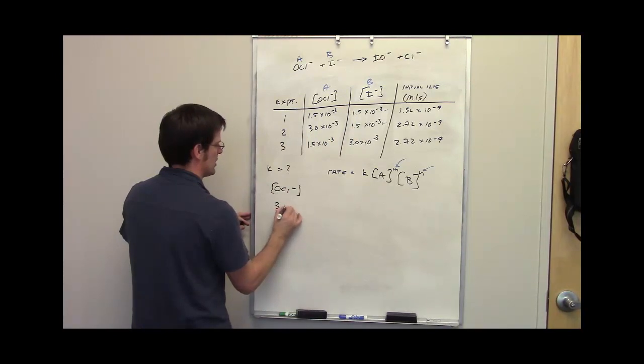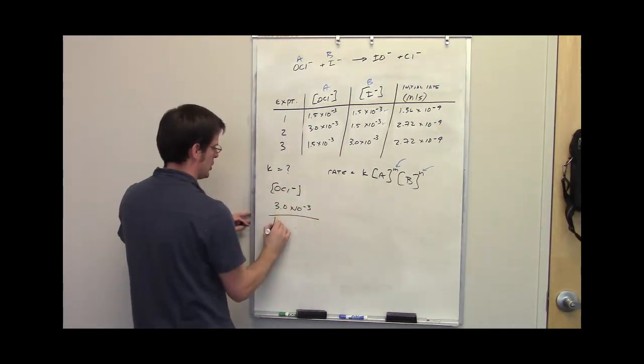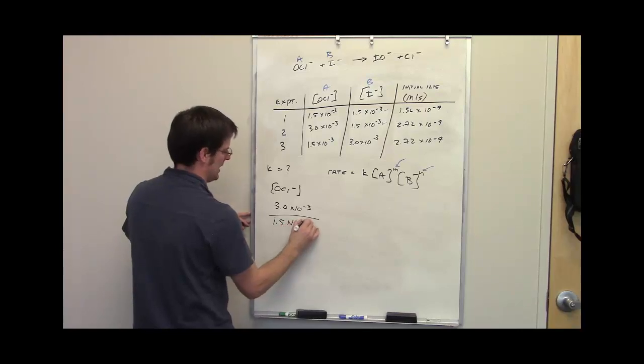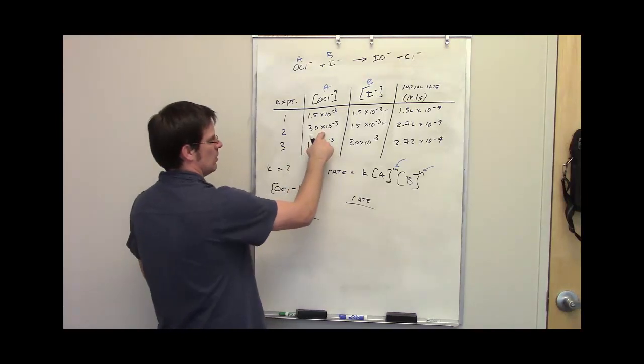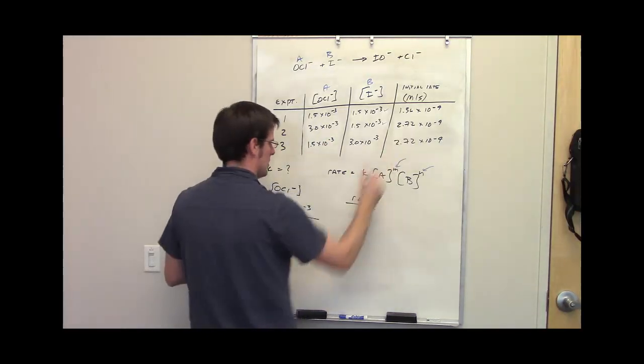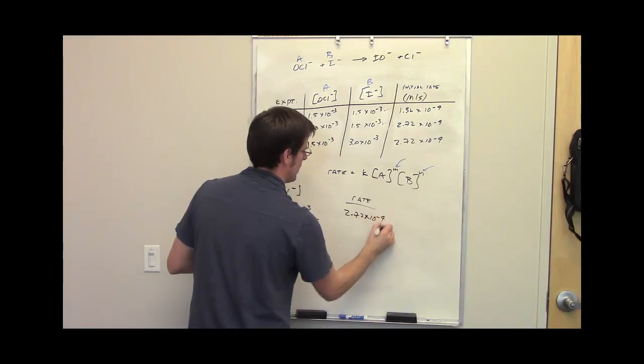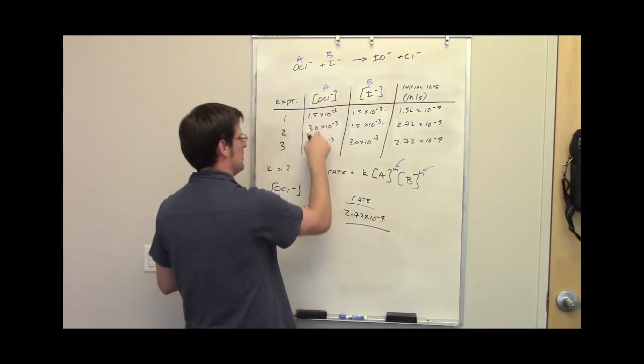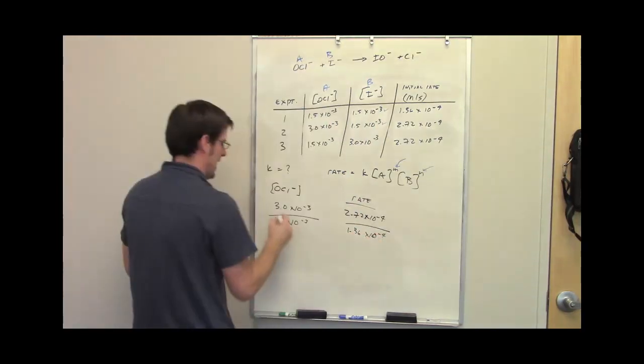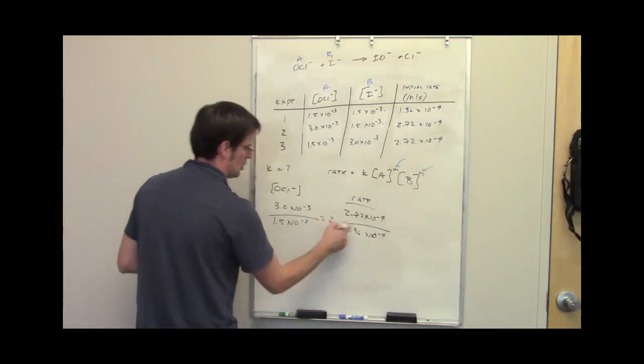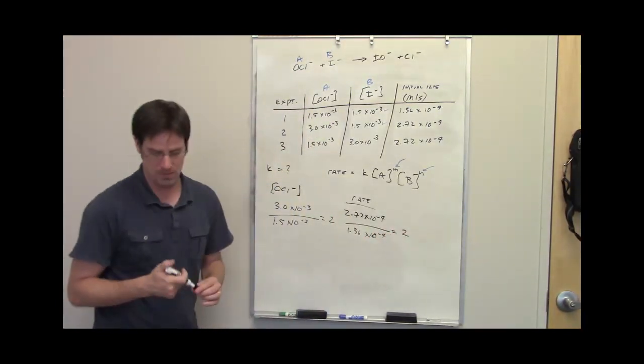In experiment 2, the concentration was 3×10^-3. In experiment 1, it was 1.5×10^-3. The rate when I had the higher concentration was 2.72×10^-4. When I lowered the concentration, it went down to 1.36×10^-4. I take this divided by that, I get 2. I take that number divided by that, I also get 2.